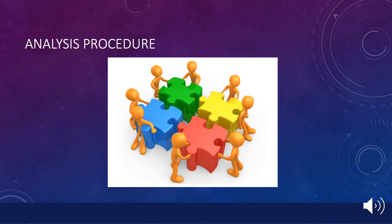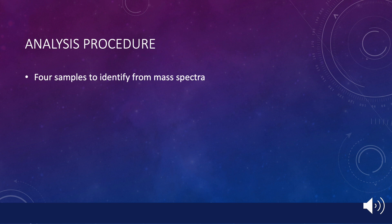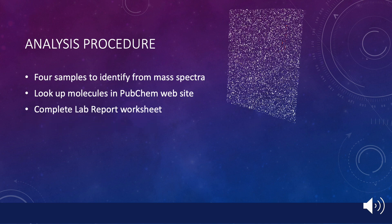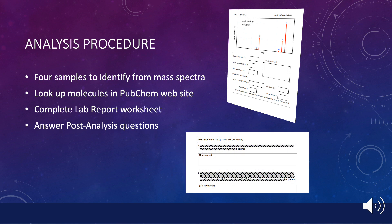The analysis procedure is spelled out in the lab background and instructions document. It includes analyzing four unknown samples, looking up the molecules you assign in a molecular database called PubChem, completing the information requested on the Lab One report worksheet, and answering the post-analysis questions. When you've finished this and submitted the report, each team member should complete the lab review quiz within 24 hours. Good luck, and please let me know if you have questions or run into a roadblock in your analysis.